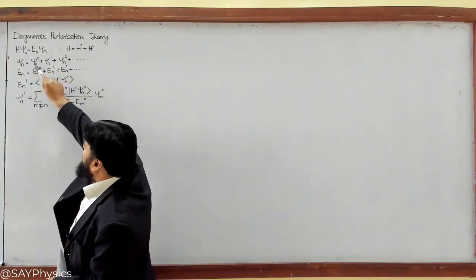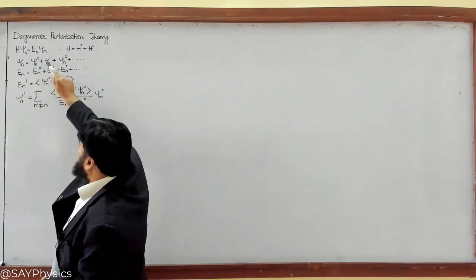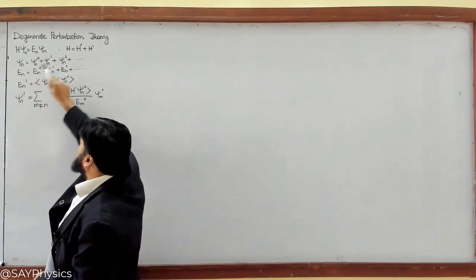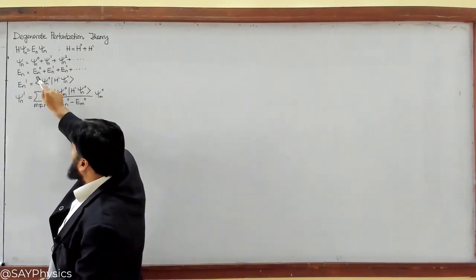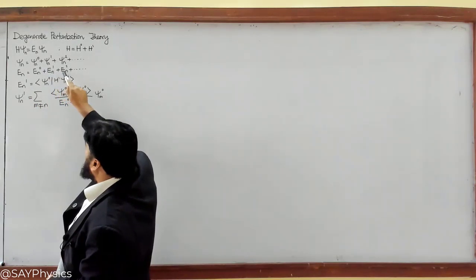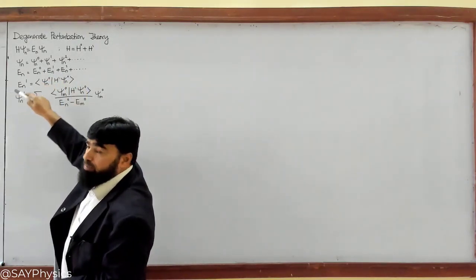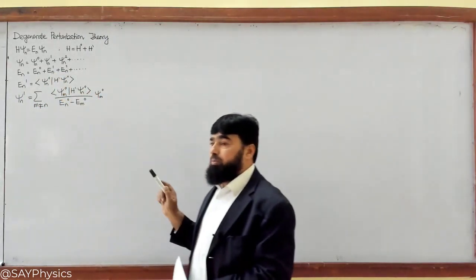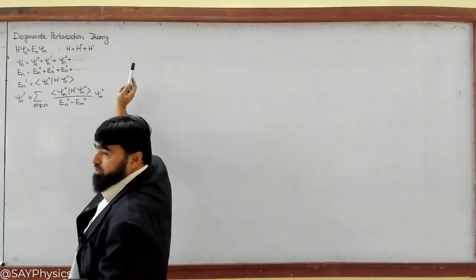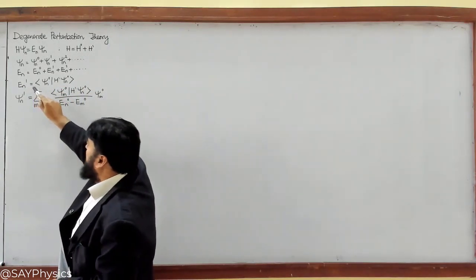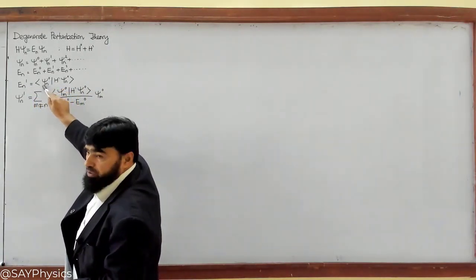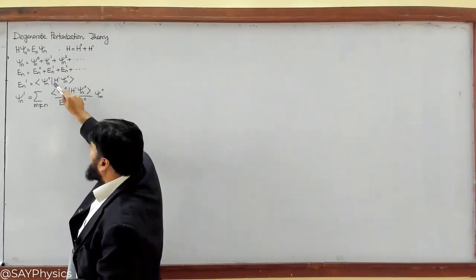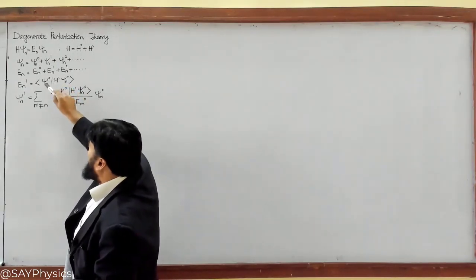Psi_n equals the unperturbed wave function plus the first order correction to the wave function, second order correction, and so on. Similarly, the energy due to this perturbation will be modified and we can find the first order and second order correction to the energy. It depends on the magnitude of perturbation, and as we go to higher orders, their magnitude becomes smaller and smaller. This is the first order correction to the energy in Non-Degenerate Perturbation Theory — the perturbed Hamiltonian or perturbation is applied on the unperturbed states.